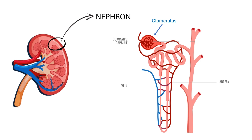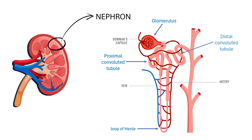The renal tubule has a few segments of its own: the proximal convoluted tubule, the U-shaped loop of Henle, and finally the distal convoluted tubule, which empties into the collecting duct, which collects the urine.